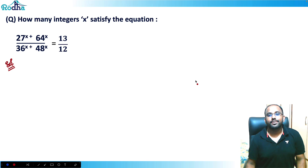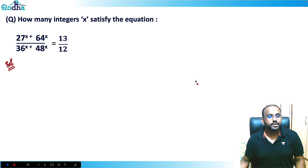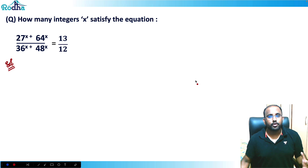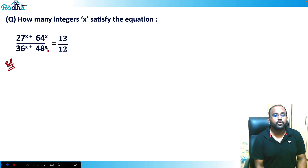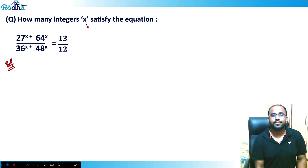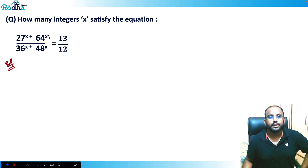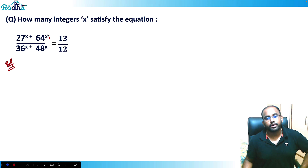Let's look at this next question — a very good question. This question asks: how many integers x satisfy the equation (27^x + 64^x) / (36^x + 48^x) = 13/12?